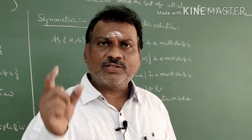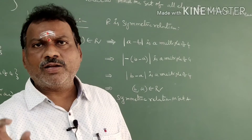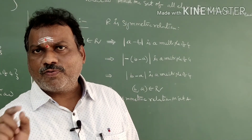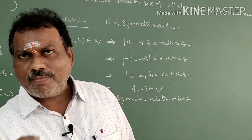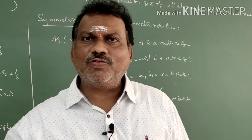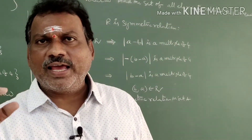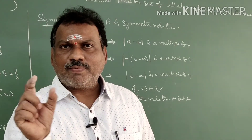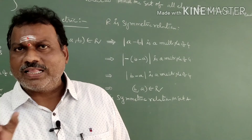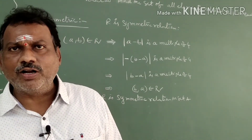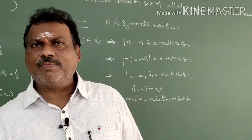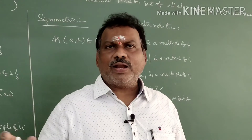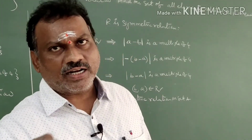If (b,c) belongs to R, then mod of b minus c is a multiple of 4. If a minus b is a multiple of 4 and b minus c is a multiple of 4, then their sum is also a multiple of 4 — for example, 4 plus 8 equals 12, which is a multiple of 4. So (a minus b) plus (b minus c) equals a minus c, which is also a multiple of 4.